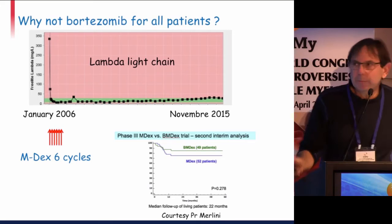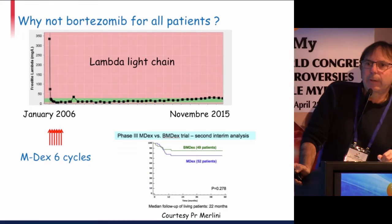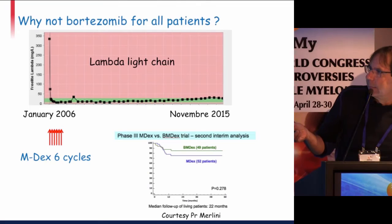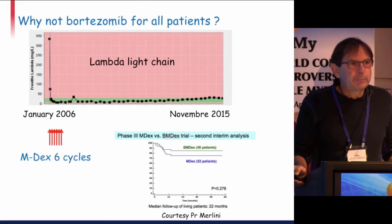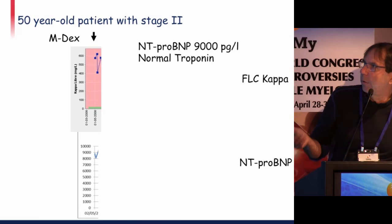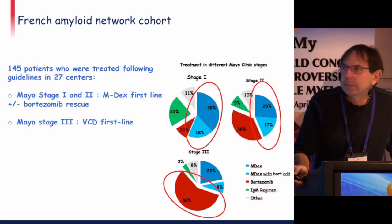After six cycles of oral MDex, a patient can remain in complete response nine years later. The first results of the European study comparing MDex versus bortezomib plus dex show a small difference that is not significant, appearing only after 10 months. So MDex can be given when patients are not too severe, adding bortezomib in case of non-response. In a patient with heart involvement and no response after the first cycle, adding bortezomib gives a rapid response and NT-proBNP drops, with a good outcome.